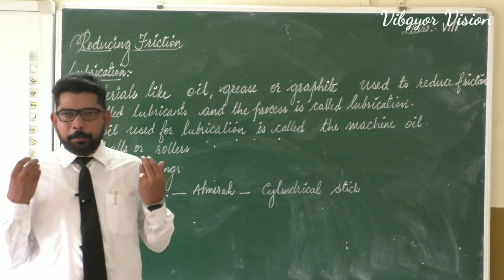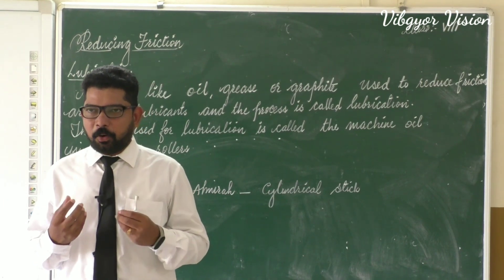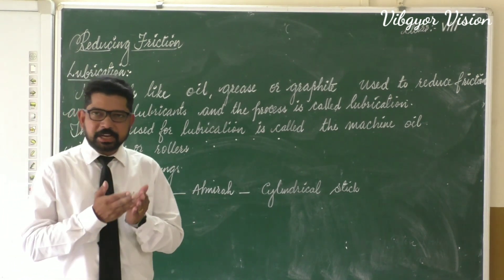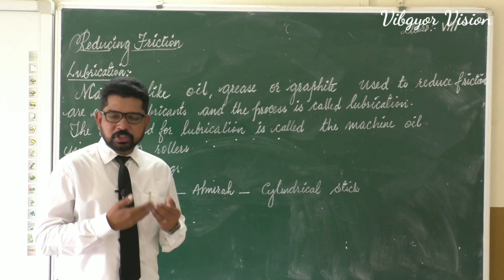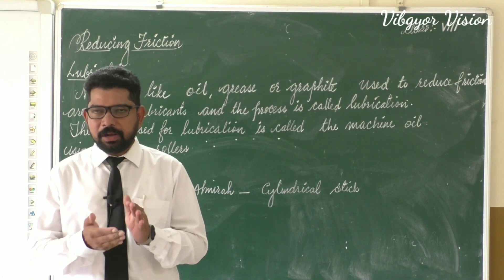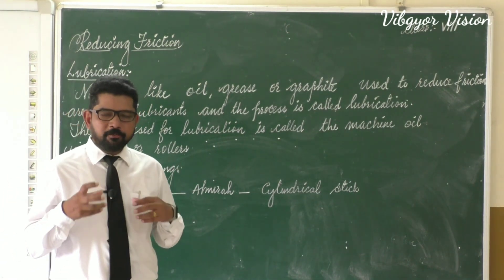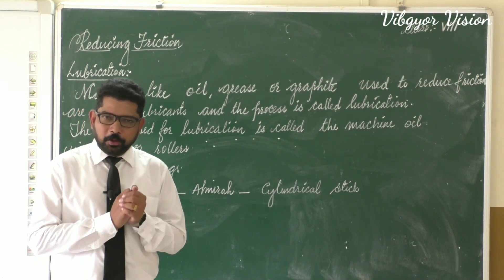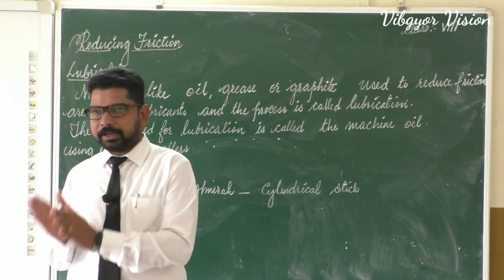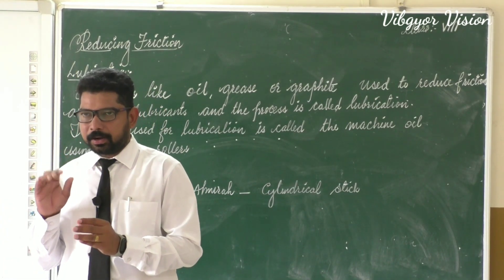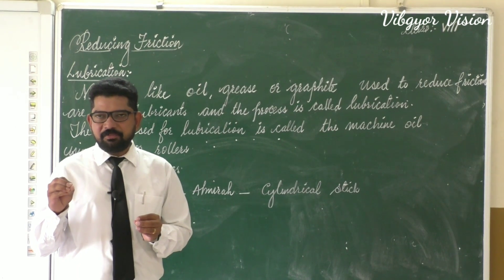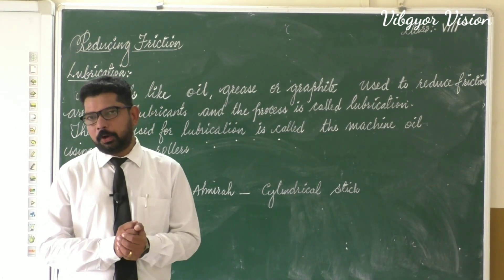Another example: we can very comfortably walk on the floor or ground because there is friction between our shoes and the ground. If there is no friction, it would not be possible to walk. Imagine a tiled floor with some oil on it — would it be possible to walk there? No, because the friction is minimal. So we won't be able to walk.